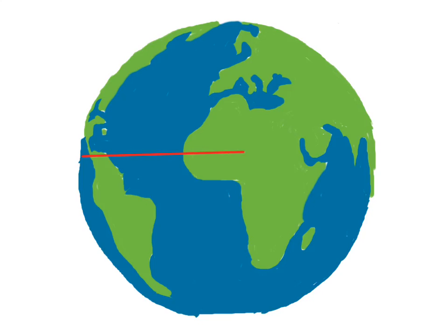The equator, which is at zero degrees latitude, divides the world into two hemispheres. We get a northern hemisphere and a southern hemisphere.